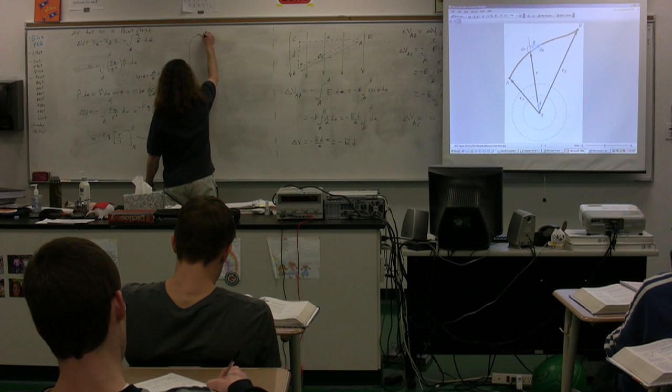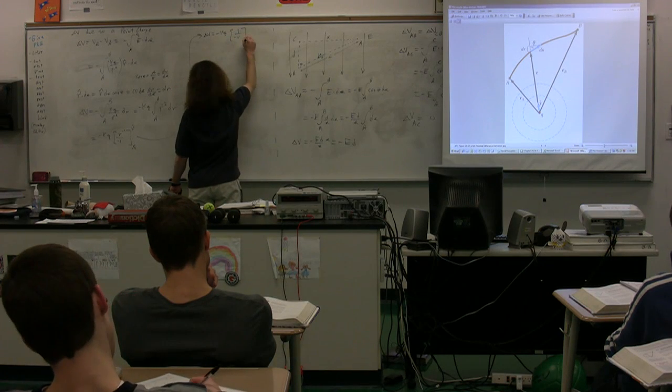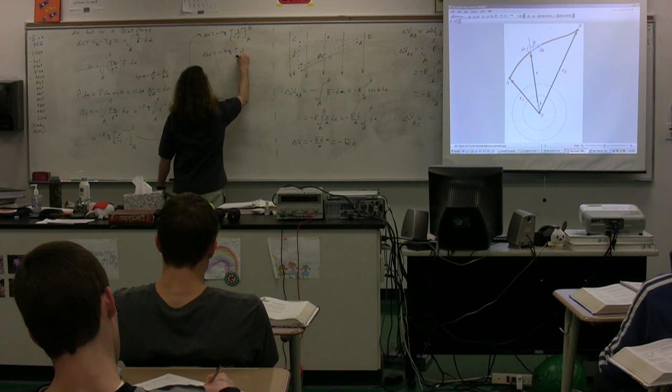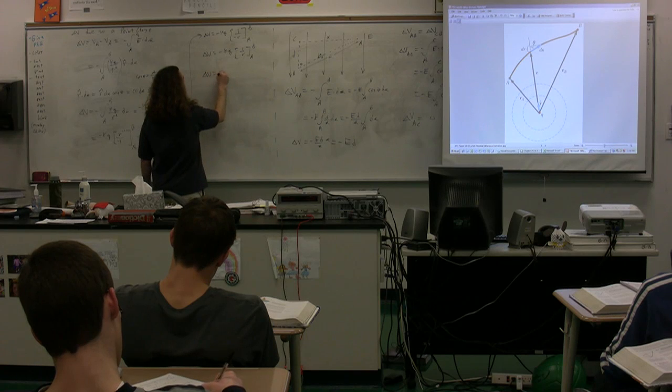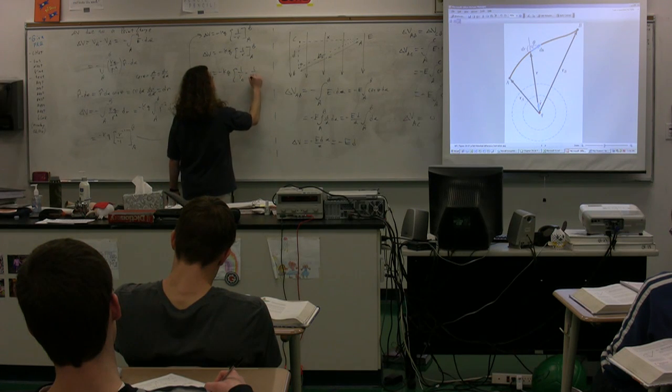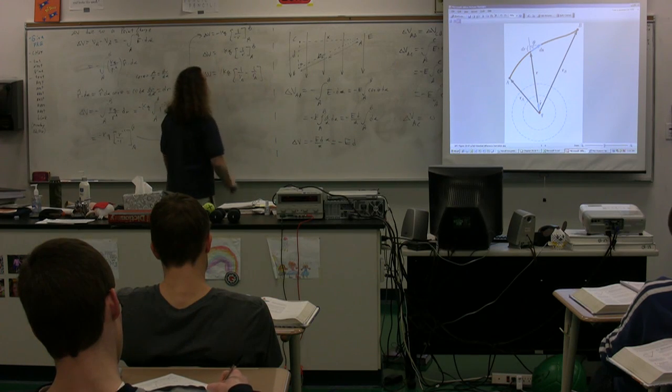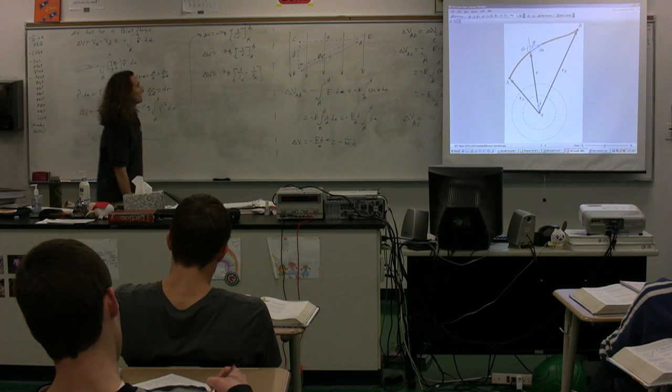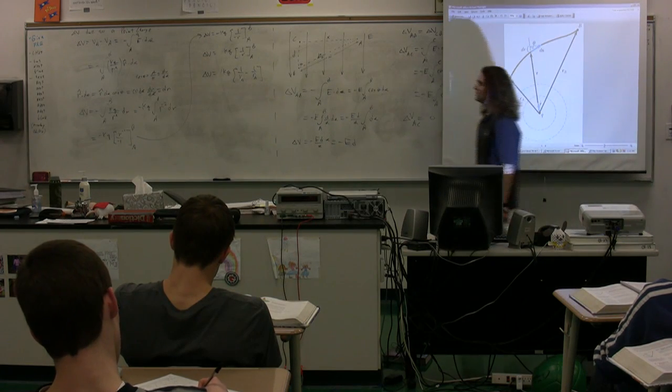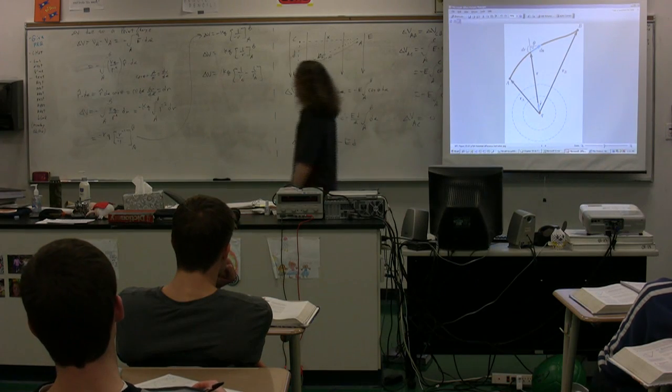So then if we rearrange this, we get the electric potential difference is equal to negative kq times 1 over negative r from A to B. The two negatives are going to cancel one another out. So let's just do that in a step so as not to confuse: kq times 1 over r from A to B. So we have the electric potential difference is equal to kq times 1 over rB minus 1 over rA. Where rB and rA are just the distances from the point particle. So this is the electric potential difference. Once again, going from A to B, we have just figured it out. It's just kq times quantity 1 over rB minus 1 over rA.